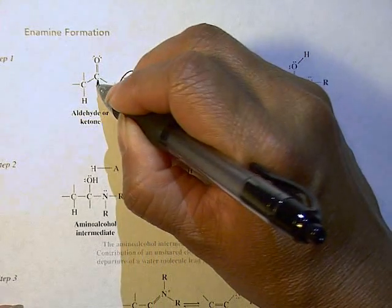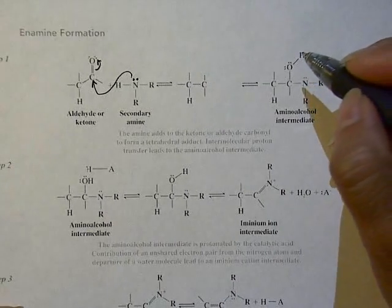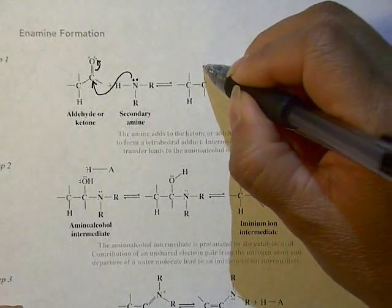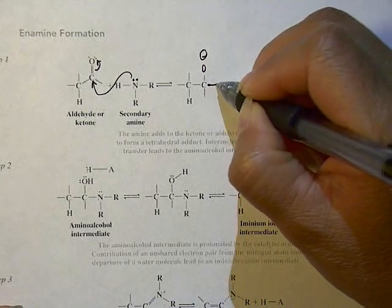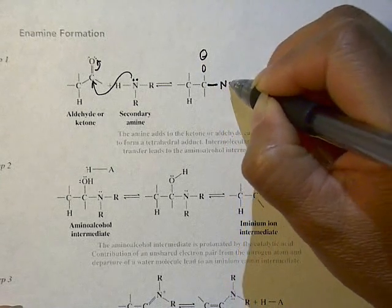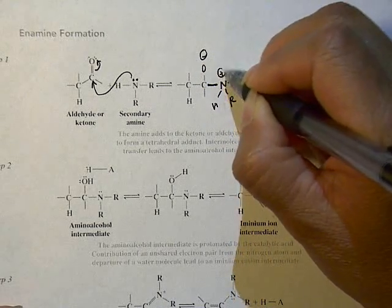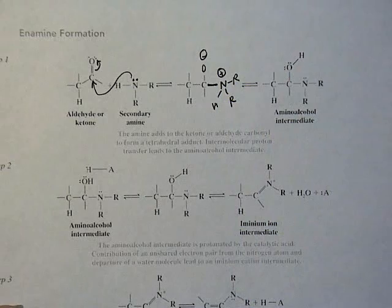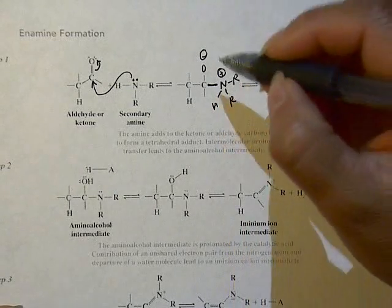Initially the lone pair on the nitrogen of the secondary amine is going to be attracted to the electrophilic carbon, so it does the same thing. Then we have oxygen with the negative charge and it's now made a bond with the nitrogen, and the nitrogen is going to be plus charged, so it formed this bond.